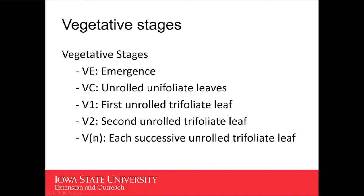We can actually continue on with vegetative staging — in Iowa we can usually do this into the second, maybe even the third week of August, where we're still getting some nodes on the main stem that are initiating new leaves. The vegetative stages are different from corn in the sense that we have this VC stage. So in corn we go from VE to V1, whereas in soybeans we have VE, VC, V1, and then continue on.